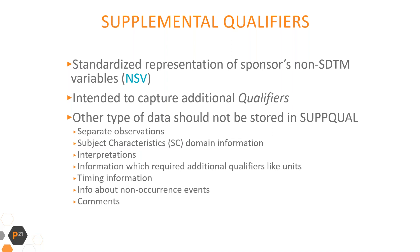For example, data which represents separate observations should be handled as separate records in general class observation domains. There are other limitations in use of SUPPQUAL datasets. According to the SDTM implementation guide, SUPPQUALs cannot represent subject-level data, which should be provided in the subject characteristics SC domain instead. Another example is findings which represent interpretations or require additional qualifiers like units or normal ranges — such information should be stored as separate records in findings domains.